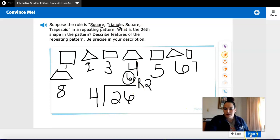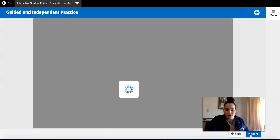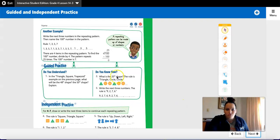Let's move on to see another example. Write the next 3 numbers in the repeating pattern. Then name the 100th number in the pattern. So the rule is 1, 3, 5, 7.